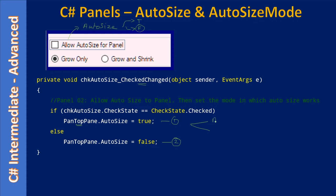Once the AutoSize property is set to true, we can control how AutoSize should behave using the AutoSizeMode property. The AutoSizeMode supports two enumeration constants: one is GrowOnly and the other is GrowAndShrink. We will see the exact constants on the next slide.